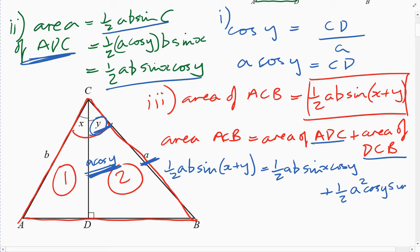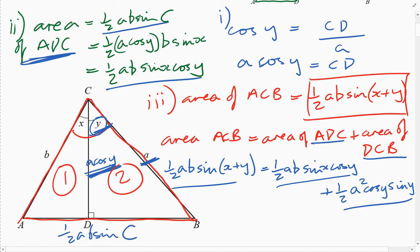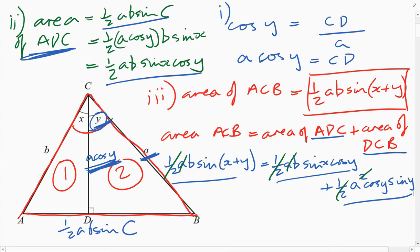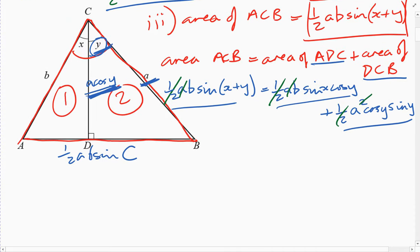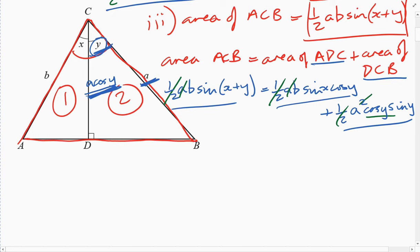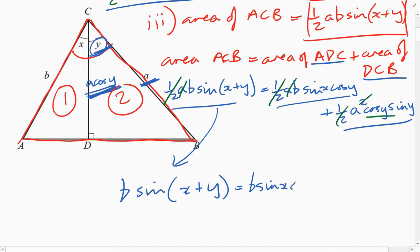All three expressions come from applying ½·AB·sin C. Now the halves all cancel, and the a's cancel too, leaving just one a. It's already looking like the addition formula for sine. We have: B·sin(x + y) equals B·sin x·cos y plus a·cos y·sin y.